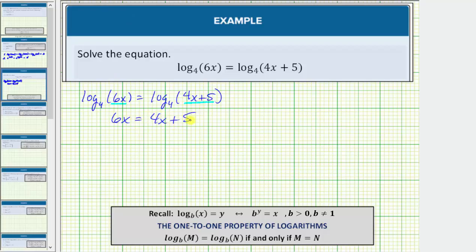To solve this equation for x, we must first have the x terms on one side of the equation. Let's subtract 4x on both sides as our first step.